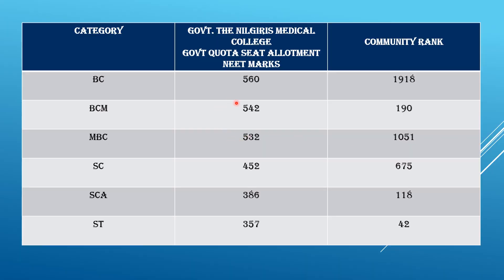So, allotment details: BC category cutoff mark was 560, community rank was 1918. BCM category cutoff was 542, community rank was 190. MBC category cutoff mark was 532, with a corresponding community rank of 1051. For SC category, cutoff mark was 452.